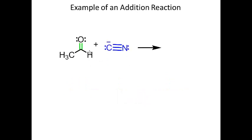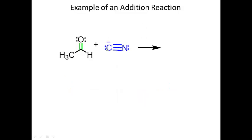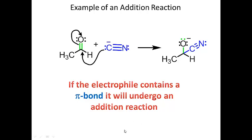Let's look at an example of an addition reaction. Here's my nucleophile — it's a carbanion, with a negative charge on carbon. This is my electrophile: carbon is partially positive and oxygen is partially negative. Here are my arrows — the carbon nucleophile attacks the electrophile, the pi bond breaks, and those electrons go onto oxygen, as shown by the lone pair on oxygen in the product. A new bond forms between the carbanion carbon and the carbonyl carbon. So if your electrophile has a pi bond, it's going to undergo an addition reaction.